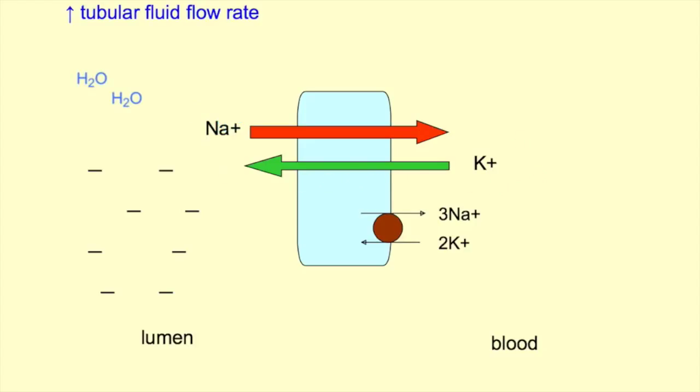The increased amount of water that is delivered results in dilution of solute in the collecting tubule. This helps to keep the concentration of potassium low in the lumen and facilitates the secretion of potassium down its electrical and concentration gradient.